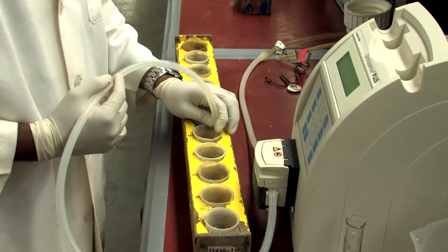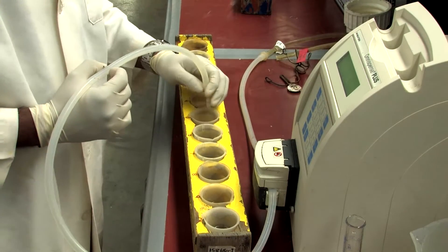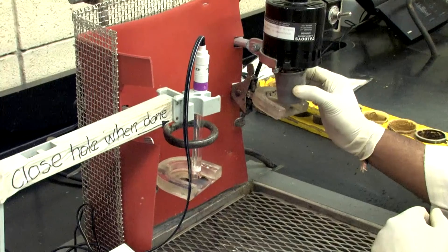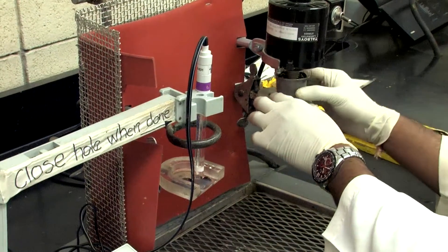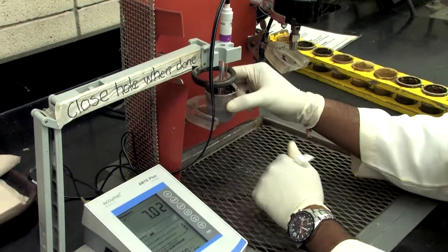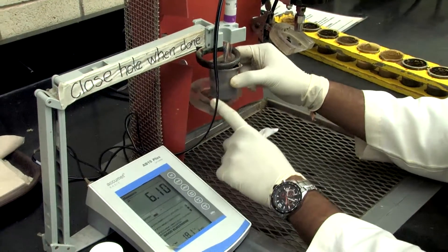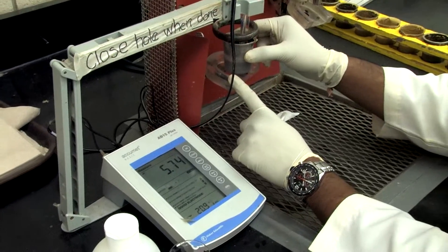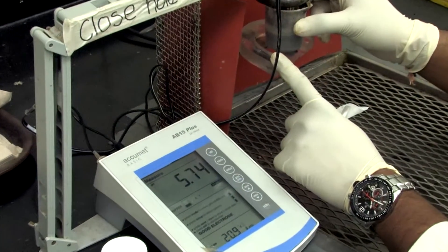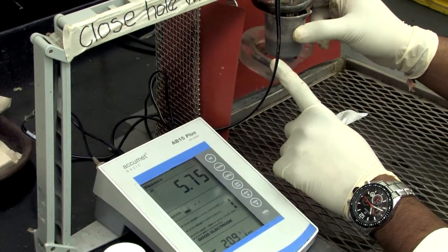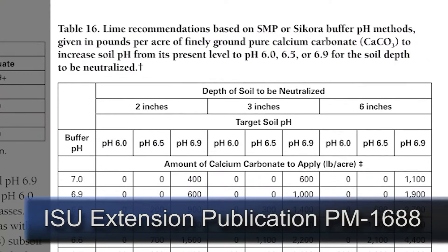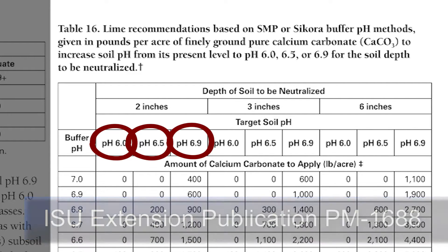For lime requirement tests, a buffered solution is added to the soil-water mixture and equilibrated after pH determination. The buffered solution removes the potential acidic ions from the cation exchange sites into the solution where the pH electrode measures their activity. The decrease in the buffer pH relates to the quantity of lime required to raise the soil pH to 6.0, 6.5, or 6.9.